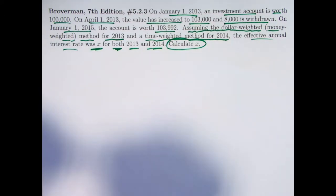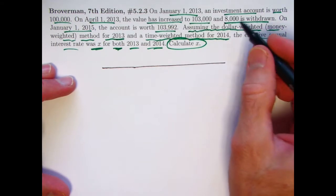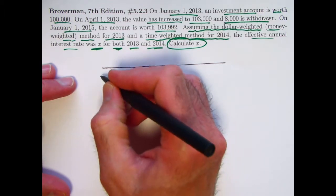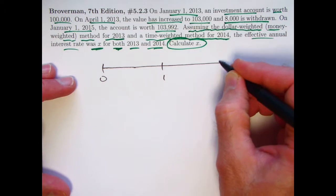So we make a timeline, and here it is important to think about when that withdrawal is happening, because we're using dollar-weighted or money-weighted for the first year. We have time zero, time one, time two.